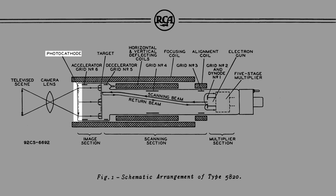The image section contains a semi-transparent photocathode on the inside of the faceplate, a grid to provide an electrostatic accelerating field, and a target which consists of a thin glass disk with a fine mesh screen very closely spaced to it on the photocathode side.